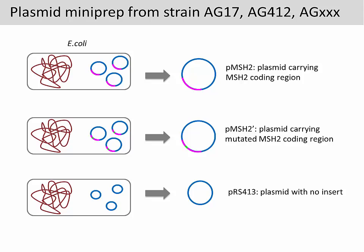The first plasmid DNA is called pMSH2. This plasmid carries the MSH2 coding region for the wild type gene. The second plasmid is called pMSH2 prime, and it is very similar to pMSH2 except that there is a mutation in the coding region of gene MSH2. The third plasmid, PRS413, is the empty vector without any insert.